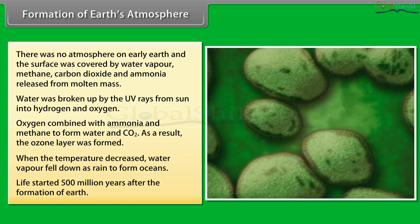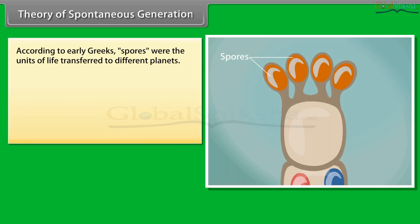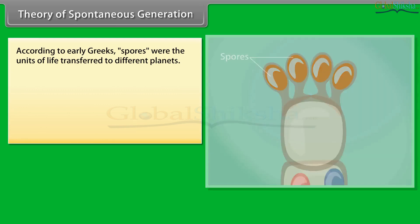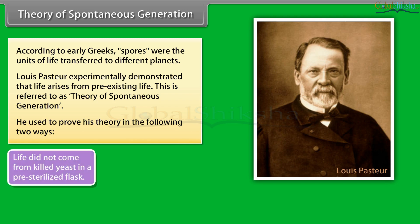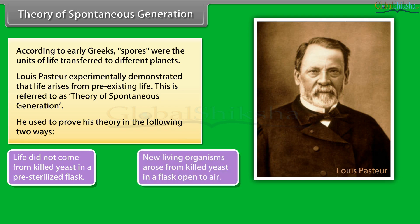Life started 500 million years after the formation of Earth. According to the Theory of Spontaneous Generation, early Greeks believed spores were the units of life transferred to different planets. Louis Pasteur experimentally demonstrated that life arises from pre-existing life. He proved his theory in two ways: life did not come from killed yeast in a pre-sterilized flask, but new living organisms arose from killed yeast in a flask open to air.